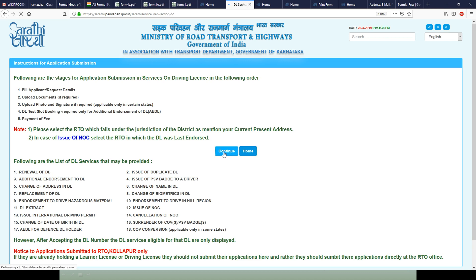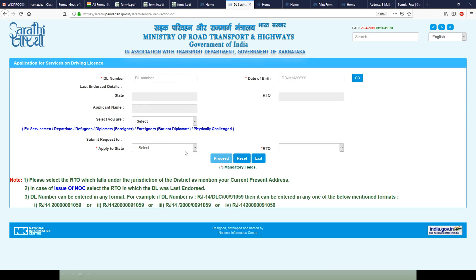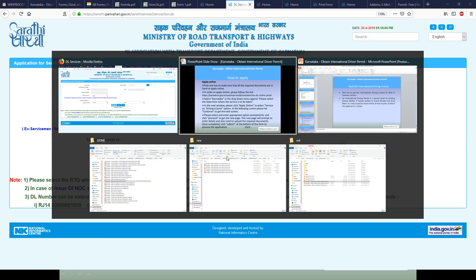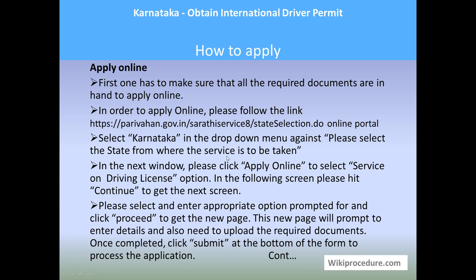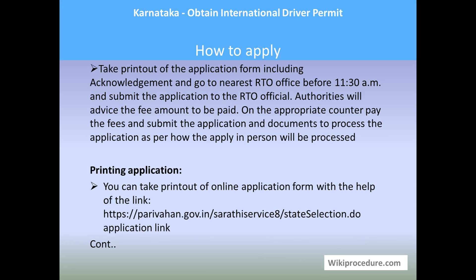You will be taken to a new page where you will be asked to enter the prompted details. Fill in the details and hit 'Proceed.' You will then be taken to a page where you must upload all required documents, enter the proper details, and hit 'Submit' at the bottom of the form to process the application. After submission, you will get an acknowledgement — print it, go to the RTO office, and submit it to an officer, who will advise you to proceed to the counter. From there, follow the in-person procedure to complete the process.